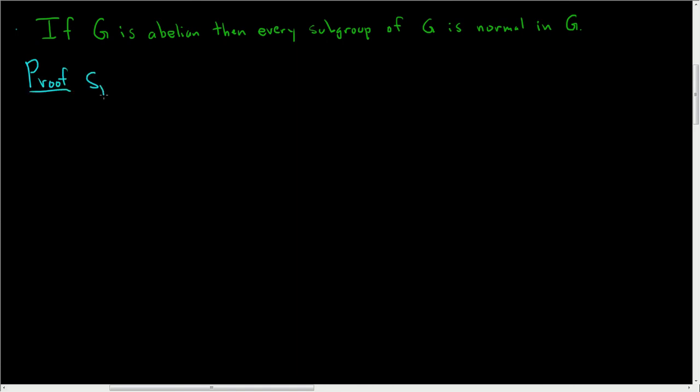So suppose G is abelian, and let's take a subgroup, let's call it H, and let H be a subgroup of G. The claim is that H is normal in G.